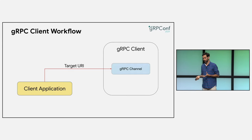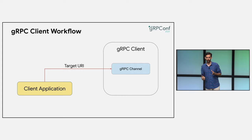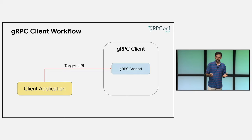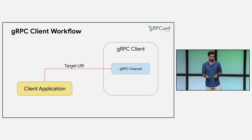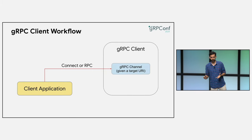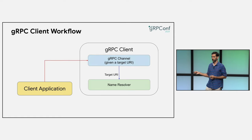Let's dive deeper into the gRPC client architecture and see a typical client workflow. The client application creates a gRPC channel and gives it the target URI representing the server it wants to talk to. At this point, the channel is just sitting idle until the client application either asks it to explicitly connect or makes an RPC. Then the channel comes to life and creates a name resolver, giving the target URI to it.